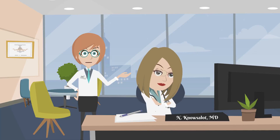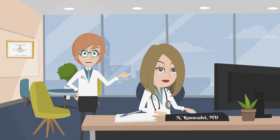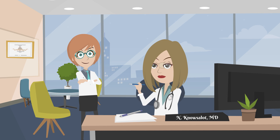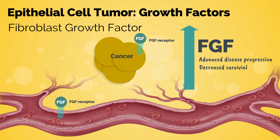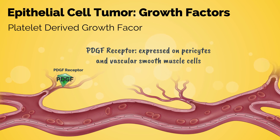There is such variety in ovarian tissue that it leads to so many tumor possibilities. Growth factor signaling promotes epithelial tumor cell growth. There are three main growth factors involved. Fibroblast growth factor (FGF) binds to FGF receptors and helps drive tumor cell growth and angiogenesis. High levels of serum FGF in cancer patients correlate to advanced disease progression and decreased survival.